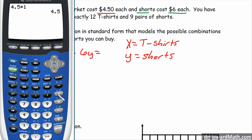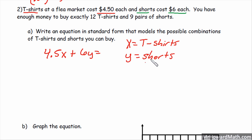4.5 times 12, and we're adding to that 6 times 9. So altogether, $108 is the total that we have to spend. So all of that has to equal $108 total dollars. So they didn't give us our total directly, we had to work that out. But this would be our equation right here.